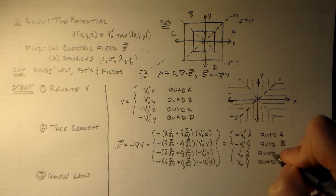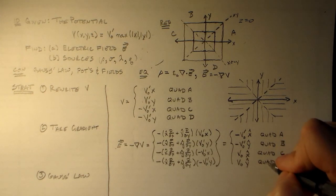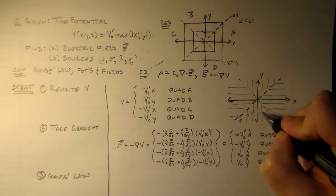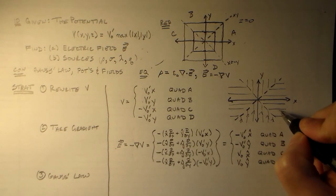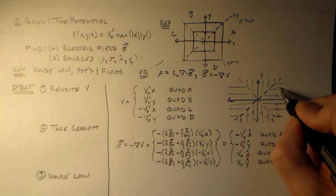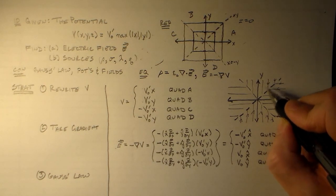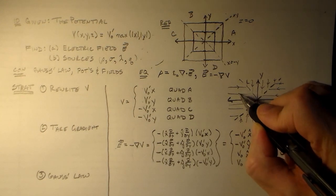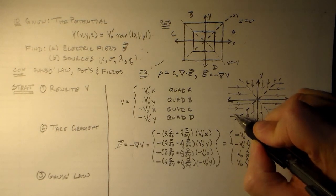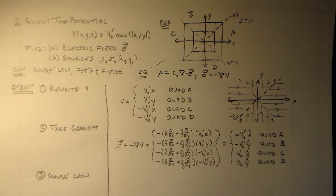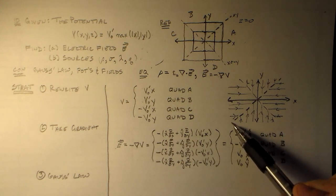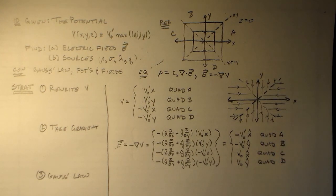Down here in quadrant D everything is pointing up. Everything points left — always pointing sort of inward. Everything is pointing inward, and that tells us something right there: just by looking at this, we know that our action is going to be at these two lines.